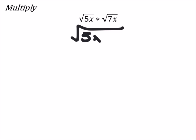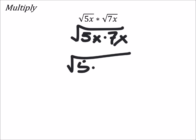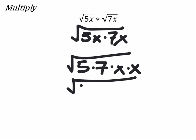So this is 5x times 7x. I'm just going to move these around - not everyone needs this step, by the way. So that's the square root of 35x squared.